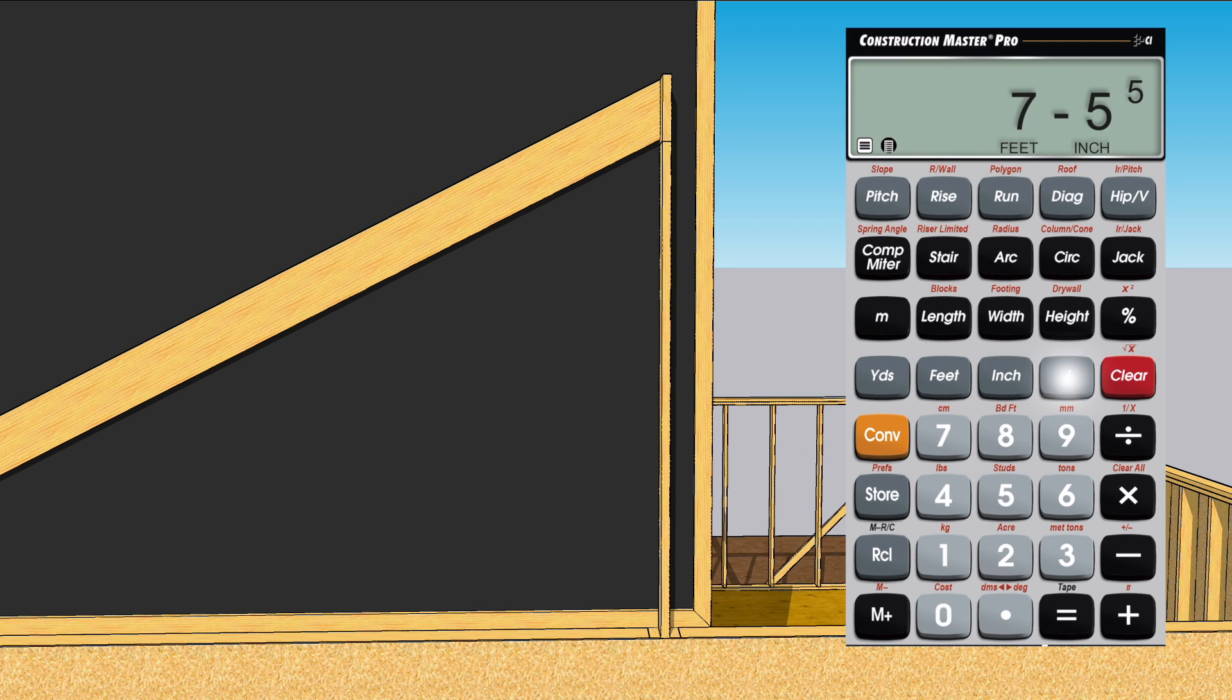So, we subtract the ridge depth from the rise, and then we add the heel height back to the resultant number, and that's the height of the ridge pole, 7 foot 1 and 3 quarter inches.